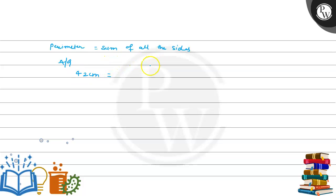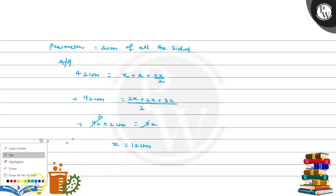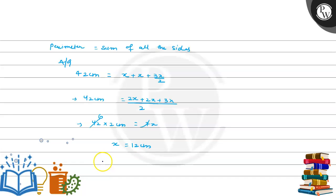So according to the question, perimeter is 42 cm, that means x plus x plus 3x by 2. Taking LCM as 2: 2x plus 2x plus 3x, so 7x. By cross multiplication, 42 into 2 is equal to 7x, so 7x equals 84, meaning x is equal to 12 centimeter.